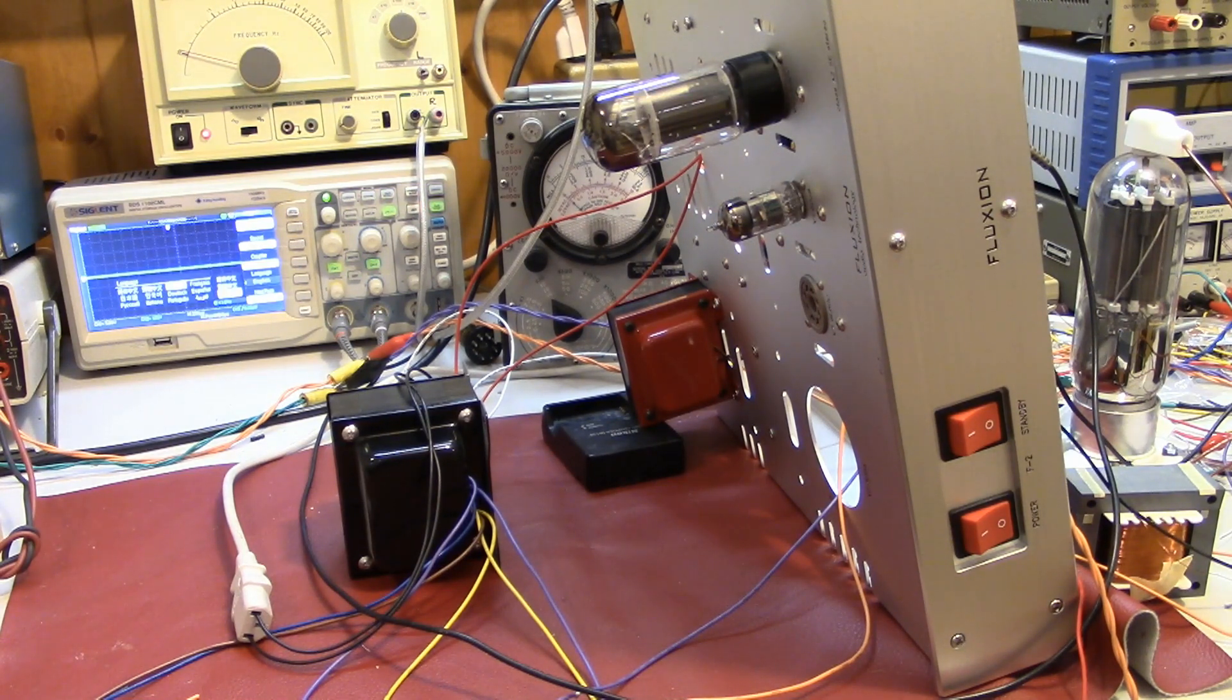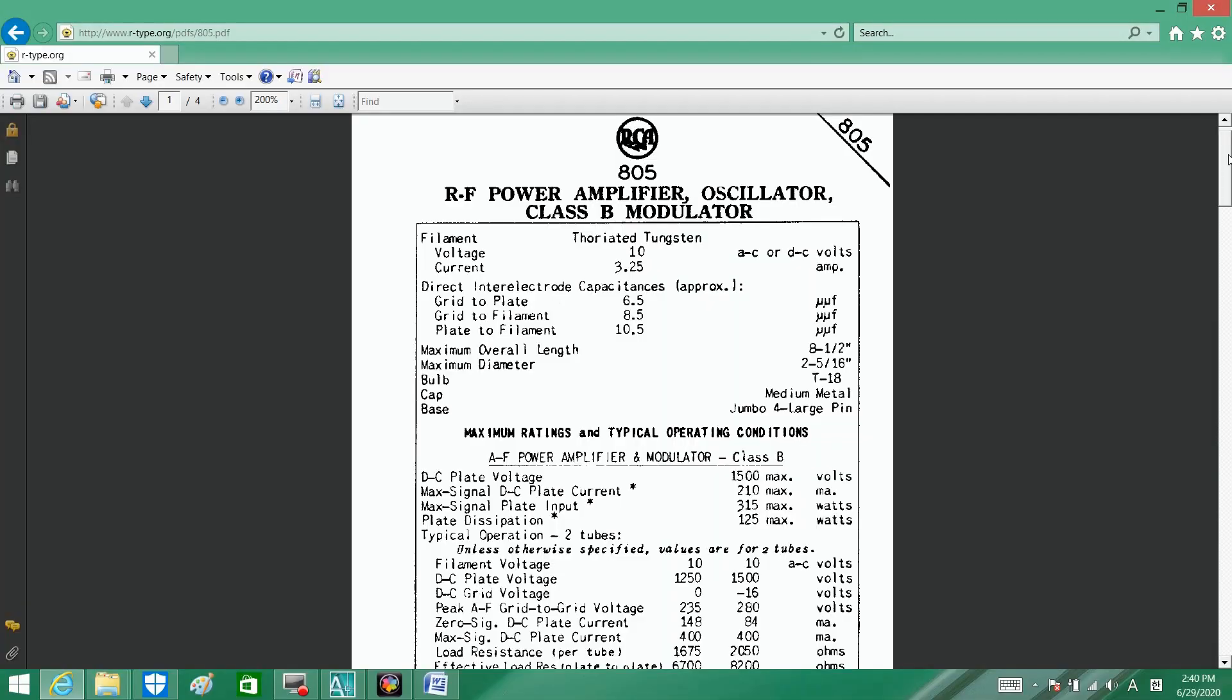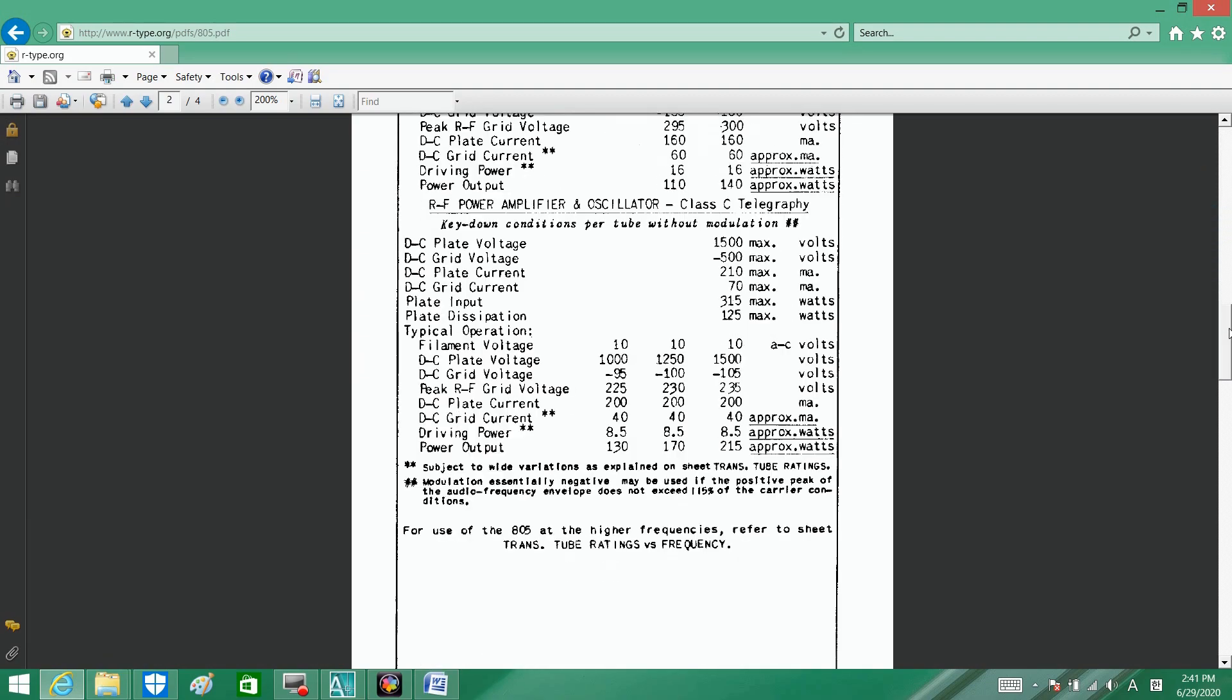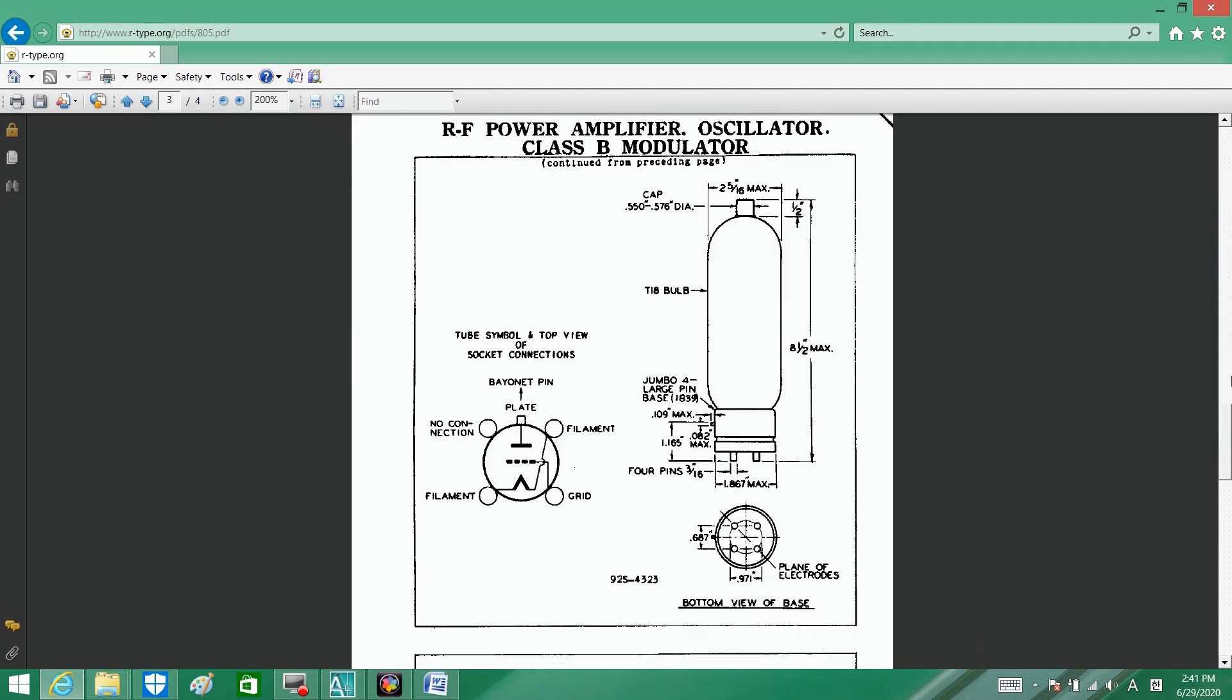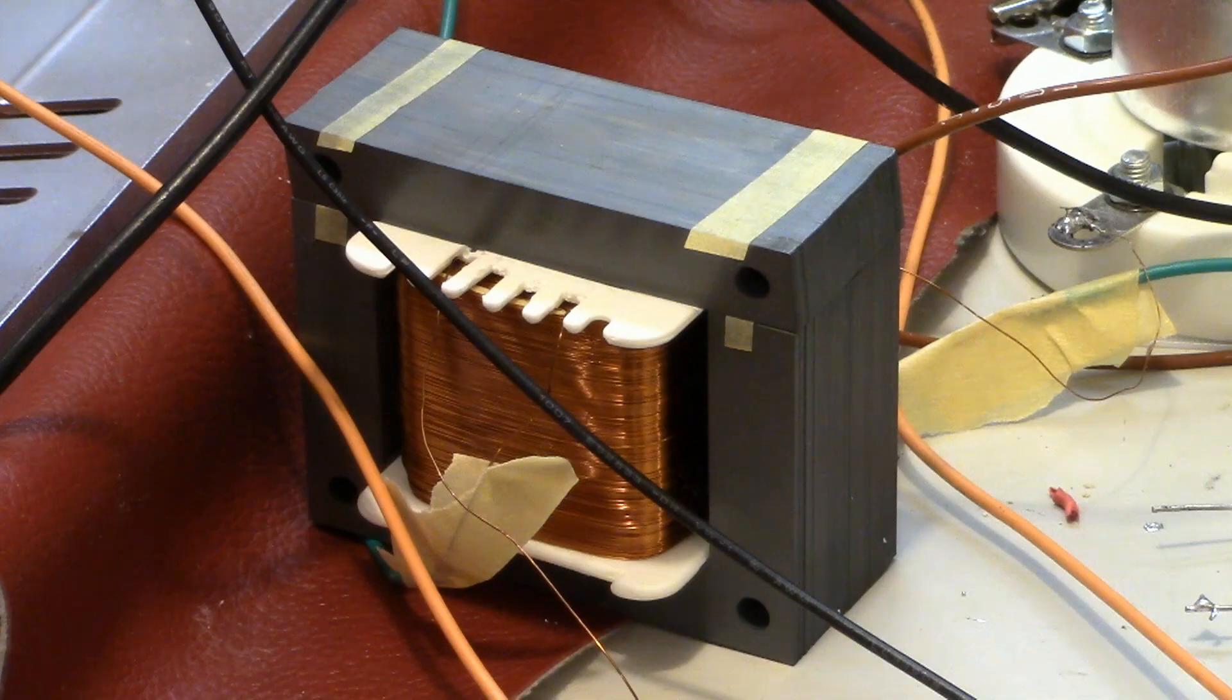First I'd like to introduce class A1 power amplification with simple circuit configuration. 805 is a high output tube with maximum allowable plate dissipation of 120 watts. I designed interstage and output transformers to achieve my goal.